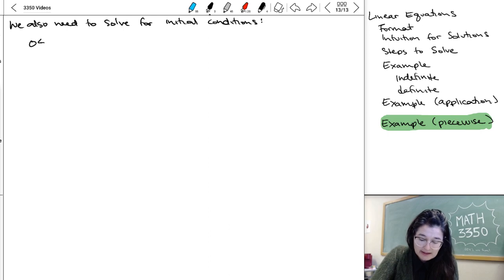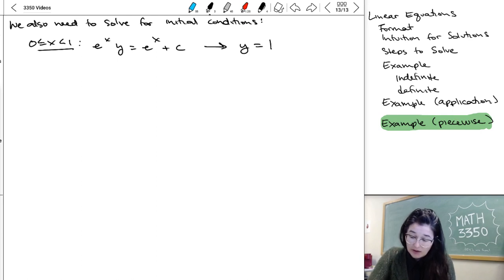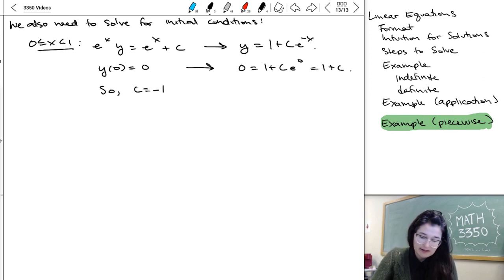So for 0 less than or equal to x less than 1, we had e to x y is equal to e to x plus c, which means that y is equal to 1 plus c e to minus x. And then our initial condition was given as y of 0 equals 0. So we'd go ahead and just plug in 0 is equal to 1 plus c e to 0, or 1 plus c. So we've got c is equal to minus 1, and y is equal to 1 minus e to minus x. So we've got that solution.